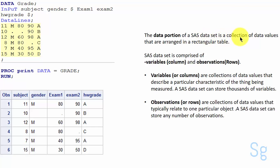The data portion of a SAS data set is a collection of data values that are arranged in a rectangular table. As you can see this is our data portion.